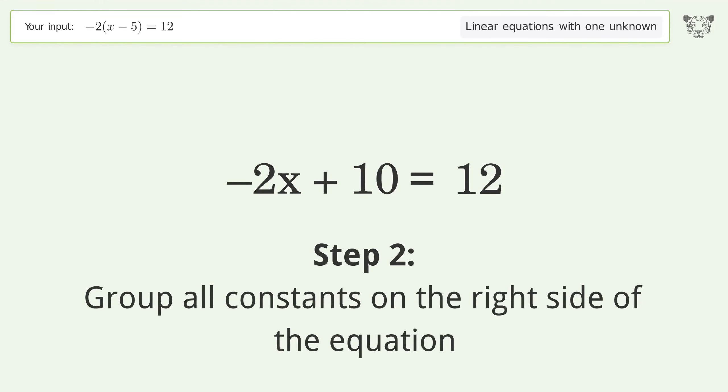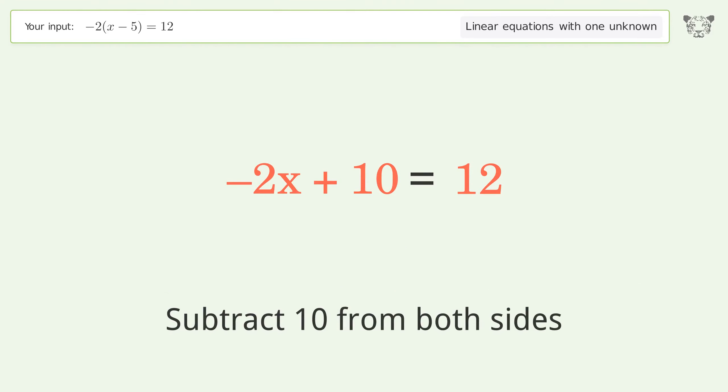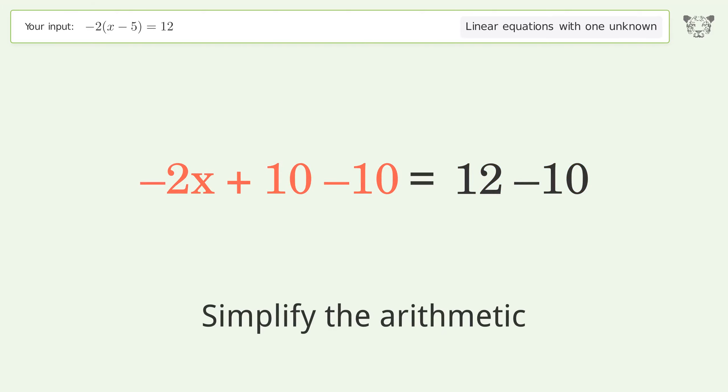Group all constants on the right side of the equation. Subtract 10 from both sides. Simplify the arithmetic.